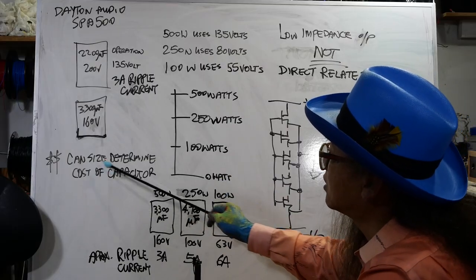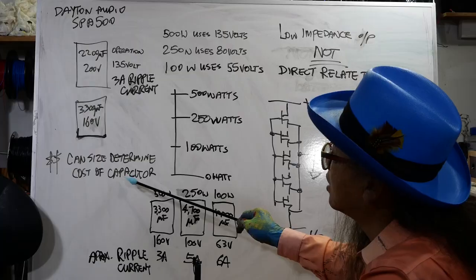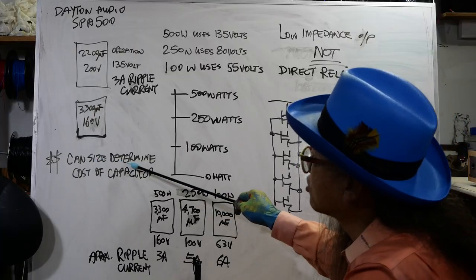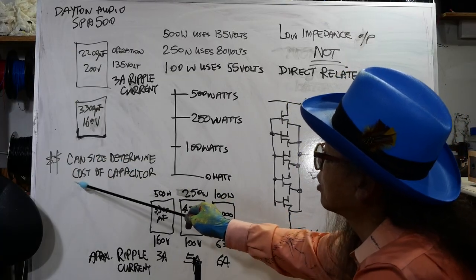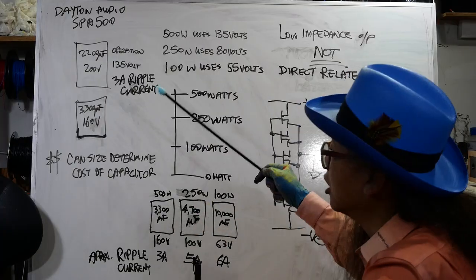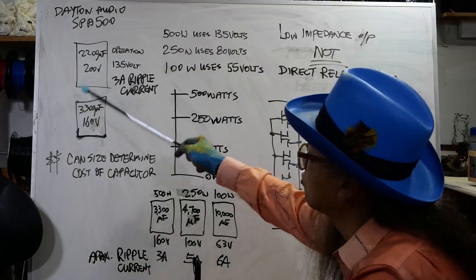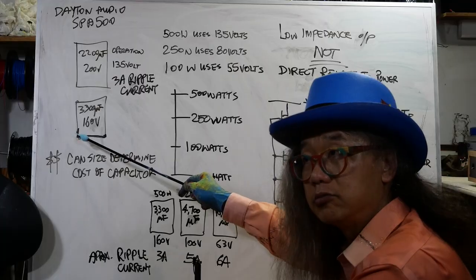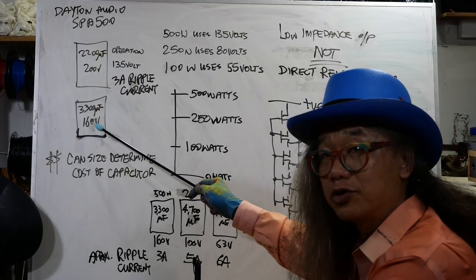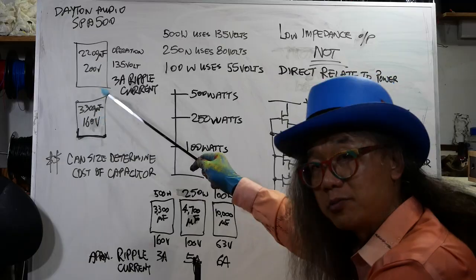The cost of the capacitor is determined by the dimensions. The can size determines the cost of the capacitor. For a given dimension of the capacitor, regardless of the voltage, they are approximately the same cost.